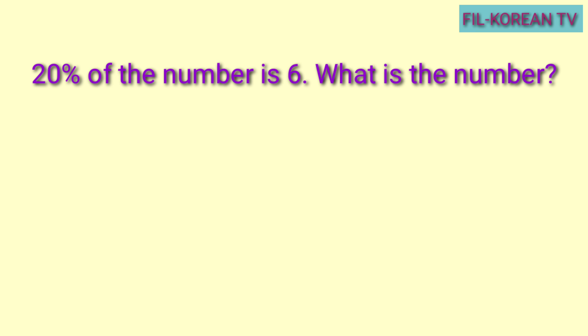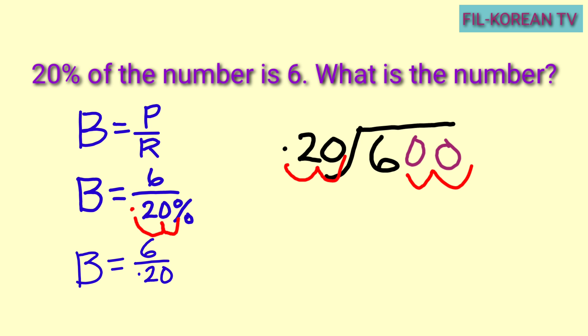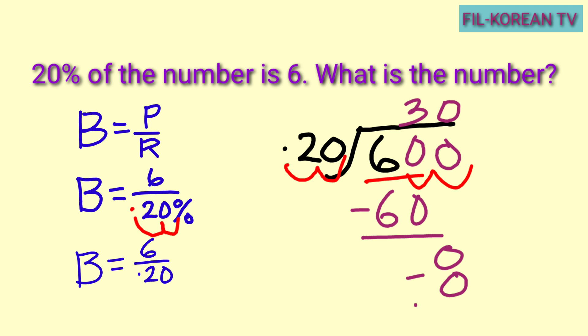Last question: 20% of the number is 6. What is the number? Base pa rin yung hahanapin natin — yung number na susunod sa 'of' ang nawawala. Gagamitin natin ang formula na base equals percentage divided by rate. Isubstitute natin yung given numbers: yung percentage ay 6, ang rate ay 20%. So, 6 over 20%. Iti-change natin ang 20% sa decimal number — i-move ang decimal point 2 places to the left — kaya ang kalalabasan ay 0.20 or 20 hundredths. 6 divided by 20 hundredths equals 30. Ang answer ay 30. 20% of 30 is 6.